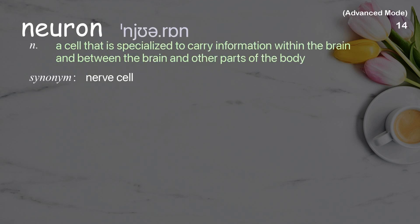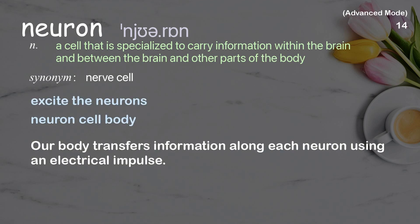Neuron: A cell that is specialized to carry information within the brain and between the brain and other parts of the body. Examples: Excite the neurons. Neuron cell body. Our body transfers information along each neuron using an electrical impulse.